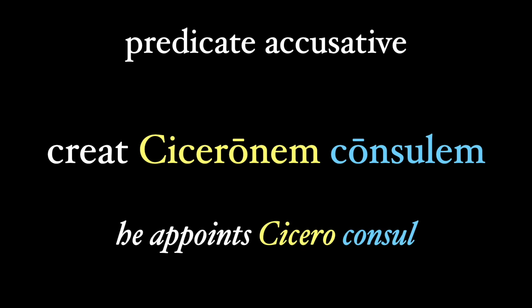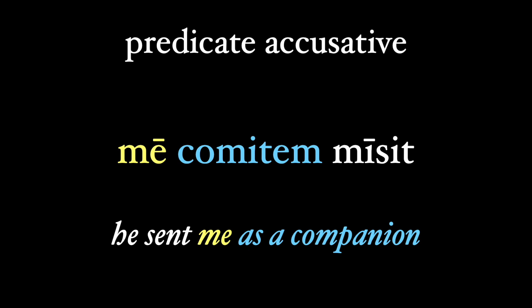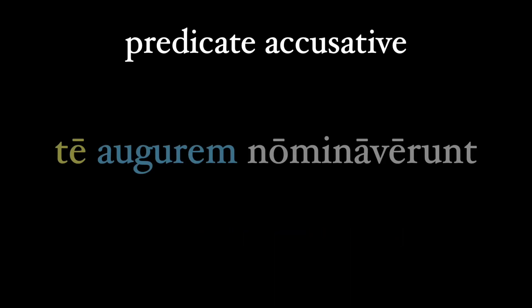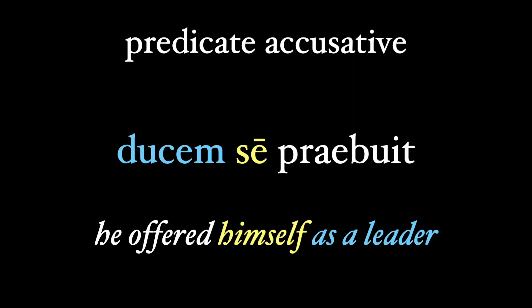Creat Ciceronem consulem — he appoints Cicero to be consul. Ciceronem is our direct object accusative, and consulem is our predicate accusative after creat. In the Aeneid, we see the phrase me comitem misit — he sent me as a companion. Comitem is our predicate accusative after the verb misit. Te augurum nominaverunt — they nominated you for augur. Or ducem se praebuit — he offered himself as a leader.